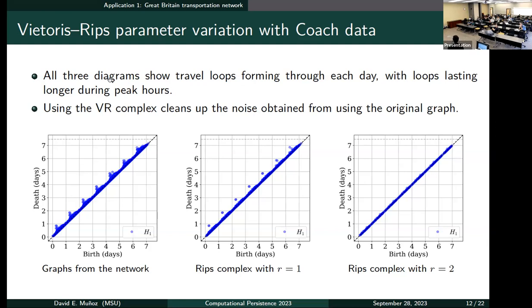But as you can see, it is not very clear. But when we compute the rips complex with r equal to one, much of this noise is no longer there. We can see these high persistence points for each of the days from Monday to Saturday, and then on Sunday also just one and another one a little under it. And then when we take r equal to two for the rips complex, we see that these high persistence points are no longer there. So we can see that in general, when we take the rips complex, we're able to clear up a lot of noise, but we also need to choose it carefully so we don't lose information from this network.